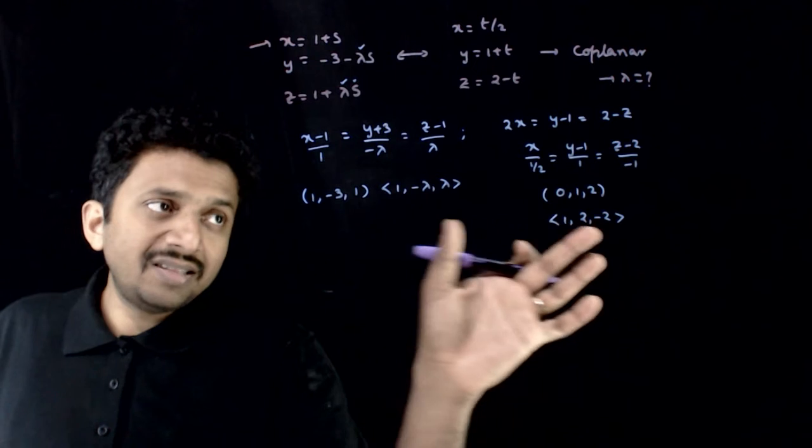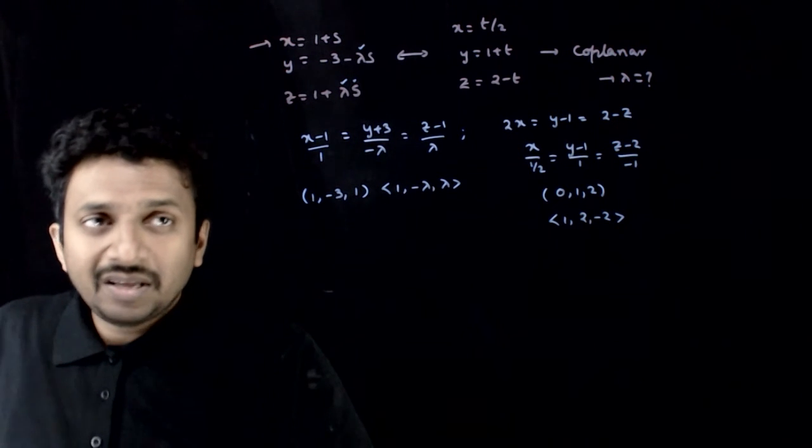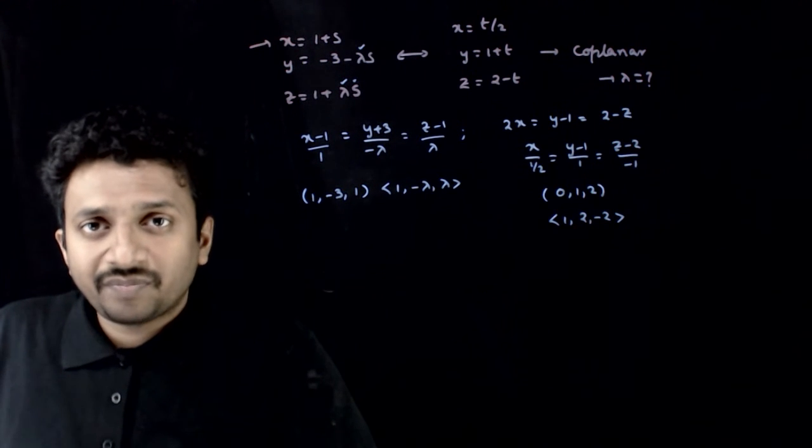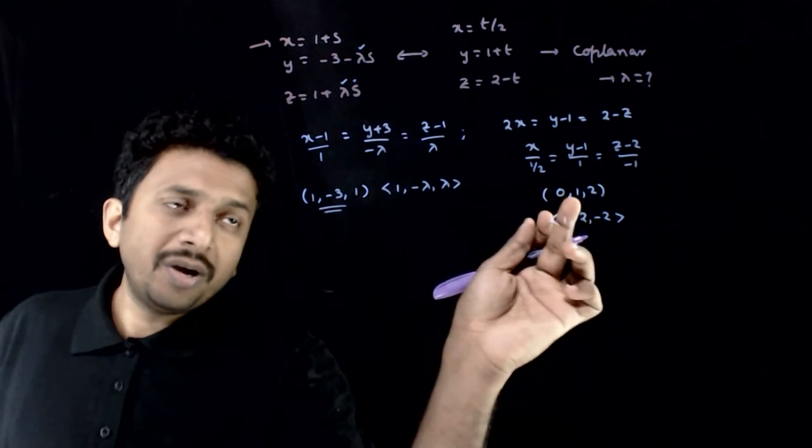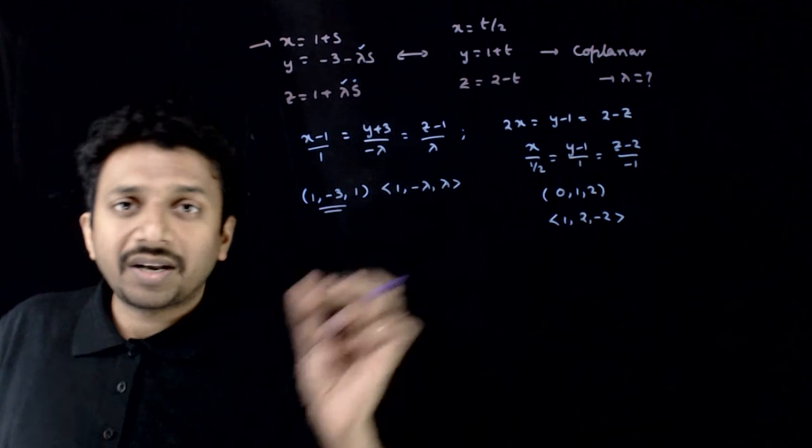These are the properties of my first line. These are the properties of my second line. Now, these two lines are coplanar. What is the meaning of it? The vector joining these two points and this vector and this vector have to be coplanar.